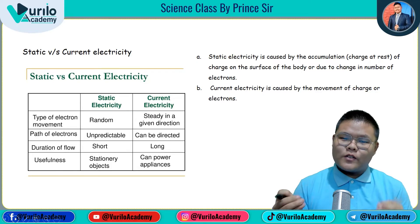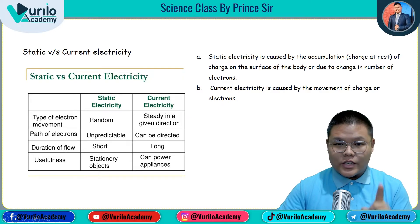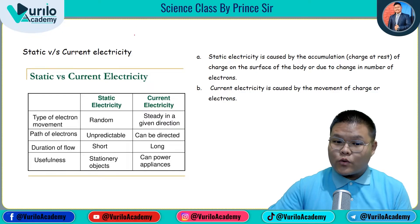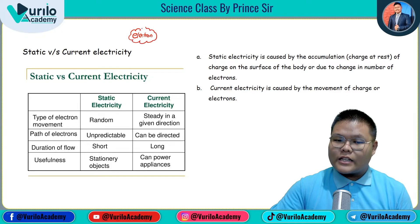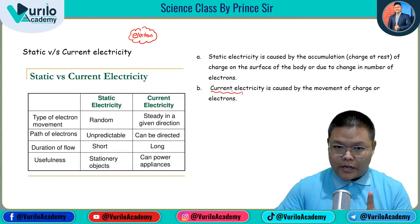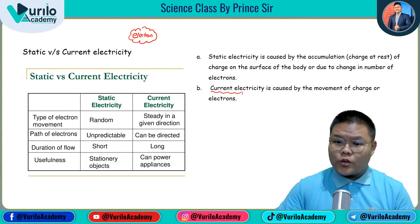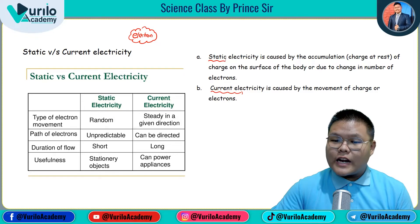Now let's cover a basic concept. The first one is static and current electricity. The major difference is how electricity is generated. If the electrons accumulate and remain stationary, this type of electricity developing in that condition is called static electricity.